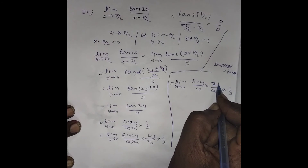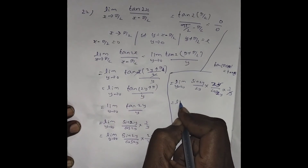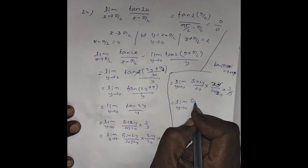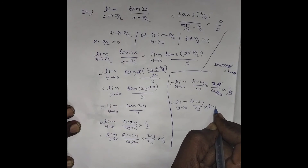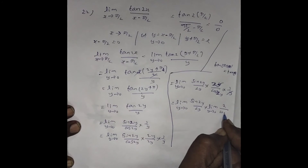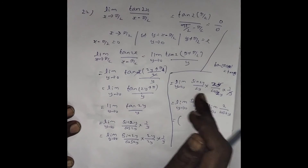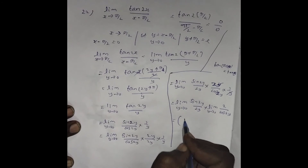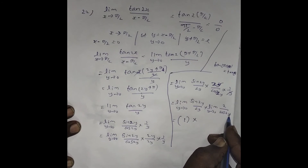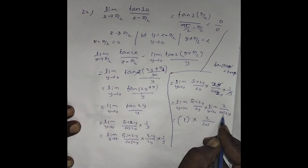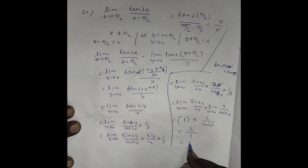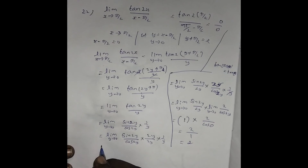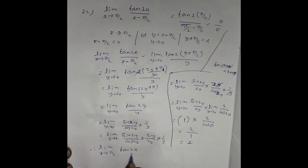The y and y cancel, giving lim(y→0) [sin(2y)/(2y)] · lim(y→0) [2/cos(2y)]. Using the standard result lim(x→0) [sin(x)/x] = 1, the first part equals 1. Substituting y = 0 in the second part: 2/cos(0) = 2/1 = 2. Therefore, lim(x→π/2) [tan(2x) / (x - π/2)] = 2.